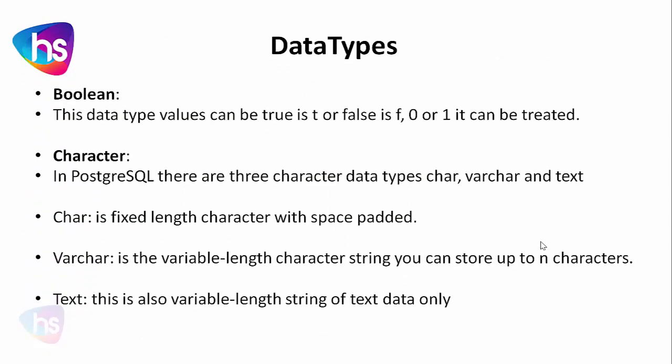The boolean data type values can be TRUE or FALSE — indicated as T or F, or as 1 or 0. You can use whichever is convenient: T/F or 1/0 for true and false.